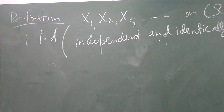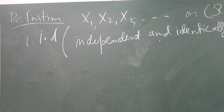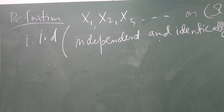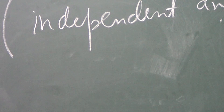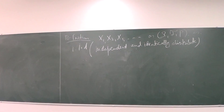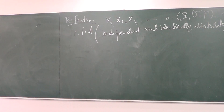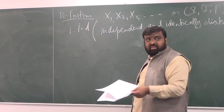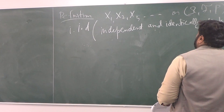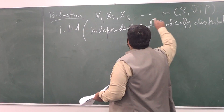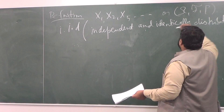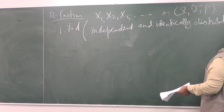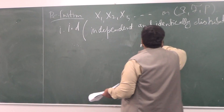They are independent — we know what is the meaning of independence of random variables — and they are identically distributed. On a probability space, we are going to call that IID, where they are independent and identically distributed.